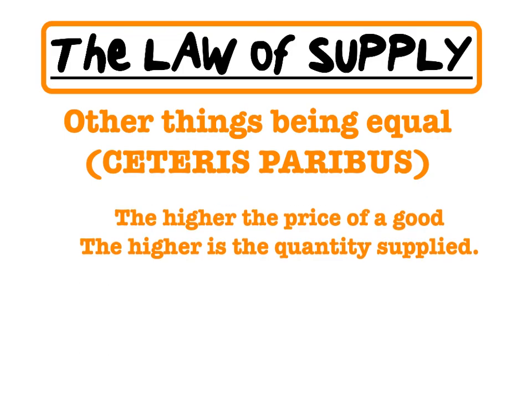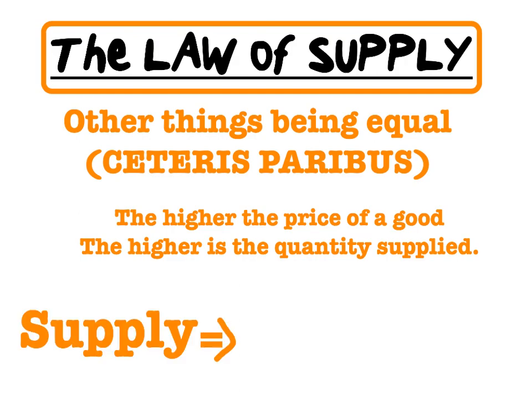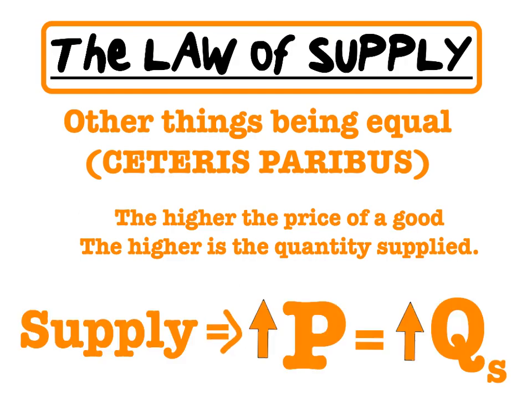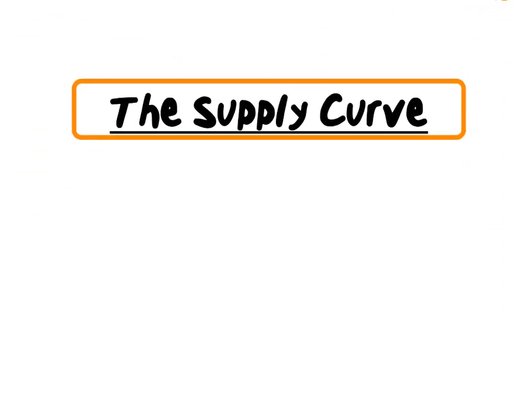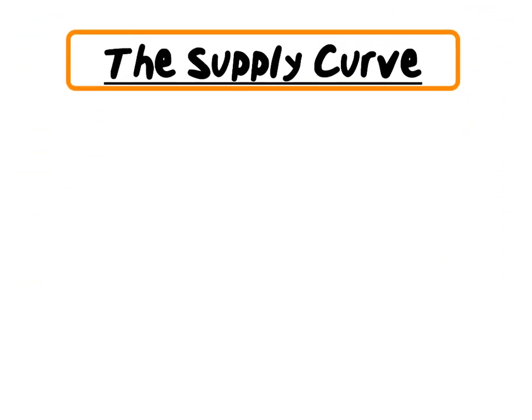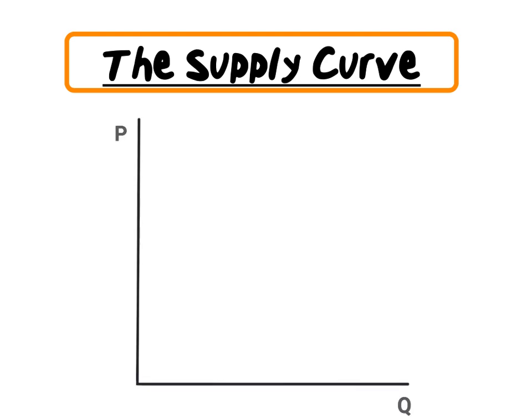Having defined supply, let's take a closer look at the law of supply. Other things being equal, the higher the price of the good, the higher the quantity supplied. We can therefore state that supply reflects an increase in price which in turn would lead to an increase in quantity supplied.